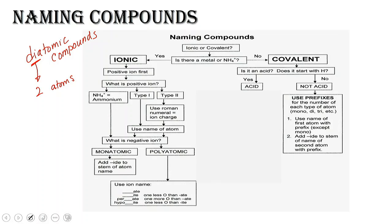And it all depends on what types of elements that we are looking at. So there are two naming systems: there is the ionic naming system and the covalent naming system. And let's go through these steps to determine whether it's ionic or covalent.